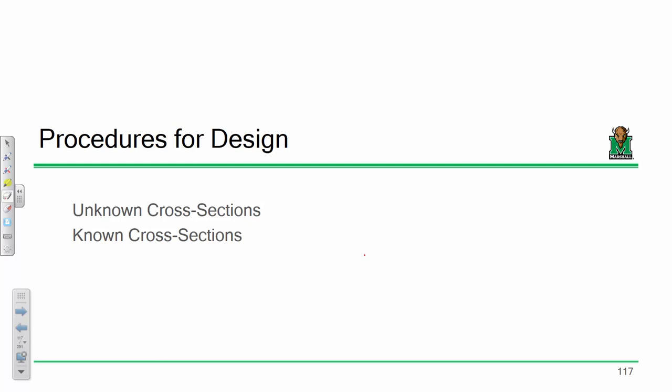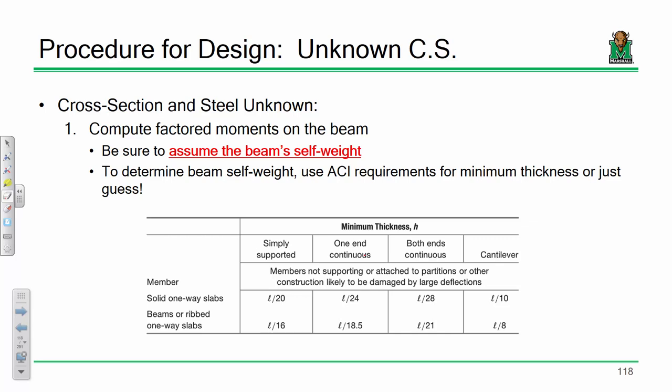I'm going to harken back to homework number one — I gave you all a floor plan with beams spaced at 10 or 12 feet, a beam of a certain span length, and you could determine the maximum bending moment, maximum shear, etc. Step one is basically to do your structural analysis and compute the factored moments on the beam. In design mode, that's a problem because you have to assume a beam self-weight — you haven't designed the beam yet.